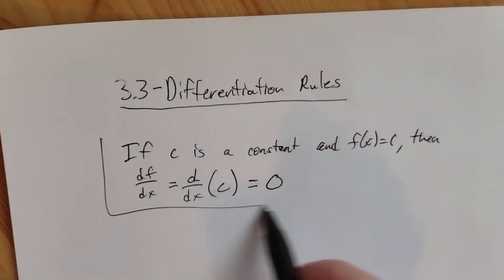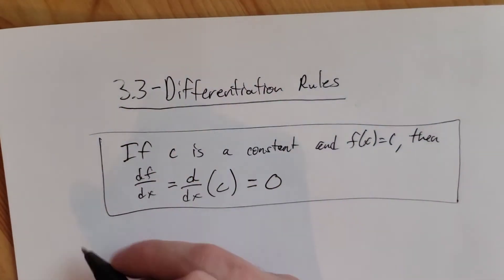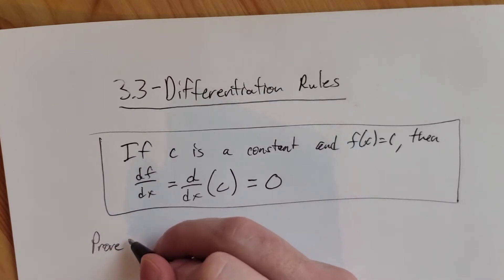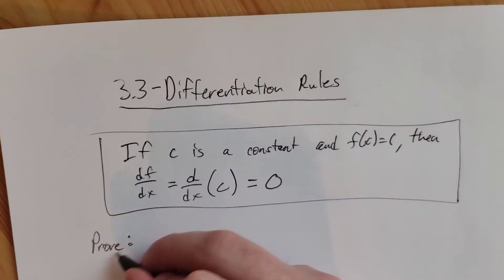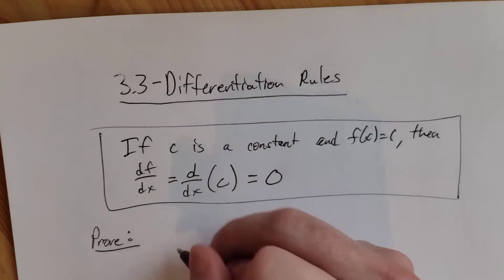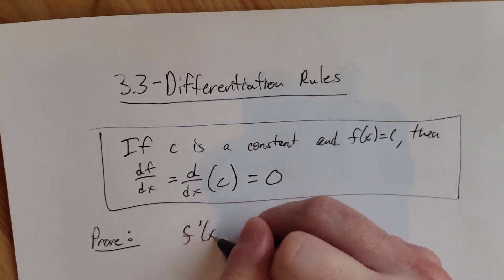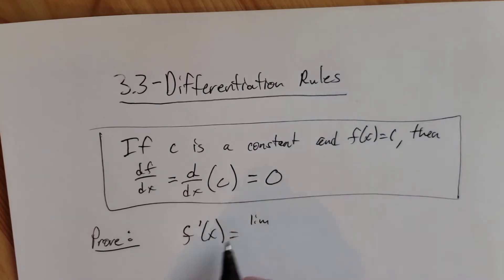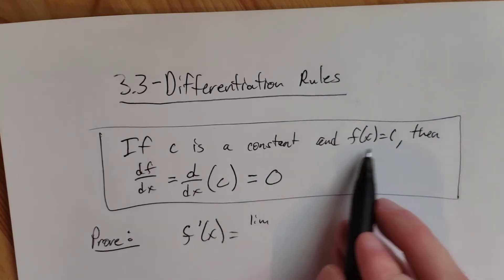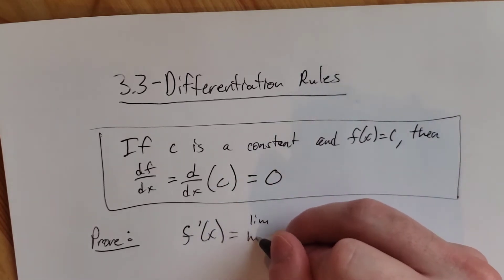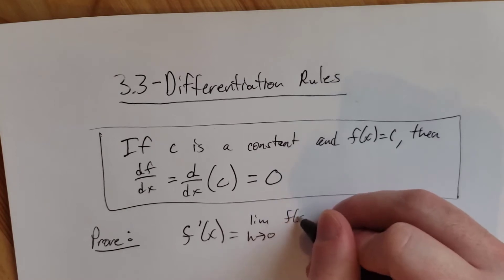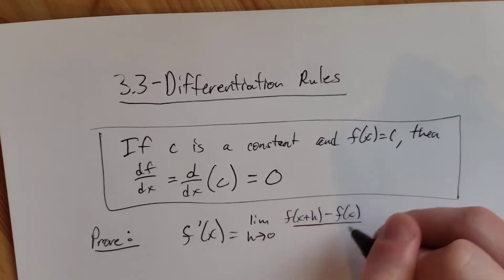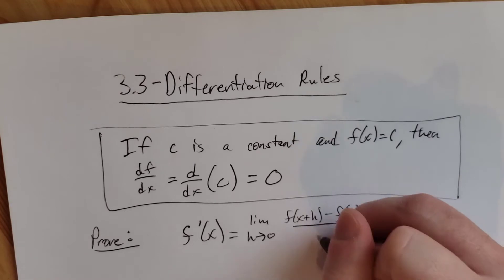That is our first rule and we'll go ahead and prove that. So f prime of x, the derivative of this function f of x equal to C, is the limit as h goes to zero of f of x plus h minus f of x all over h.